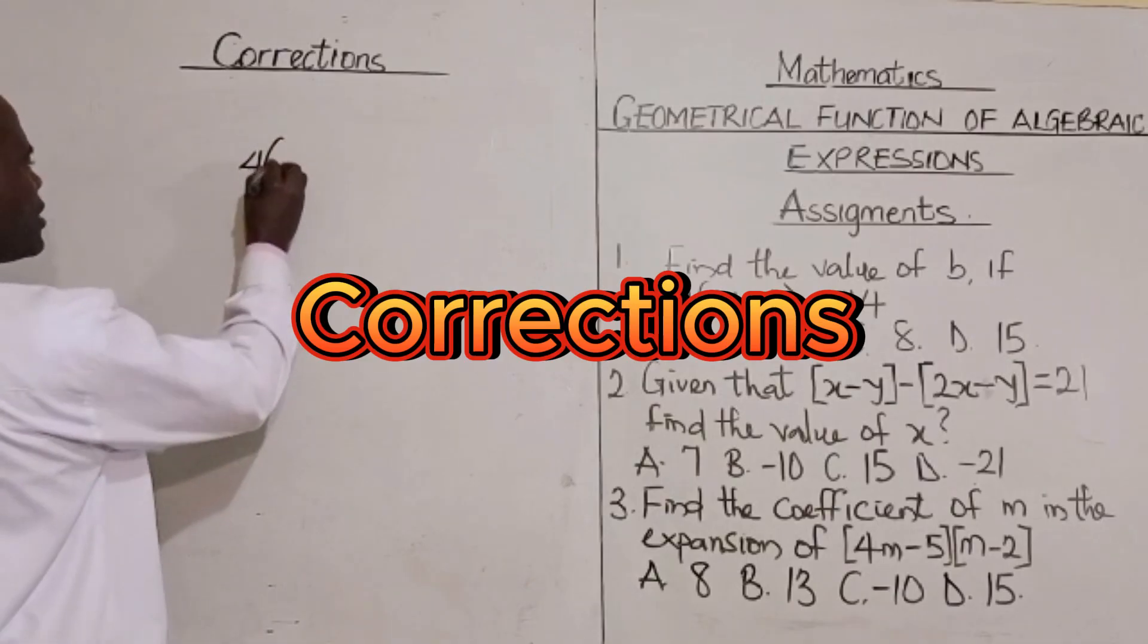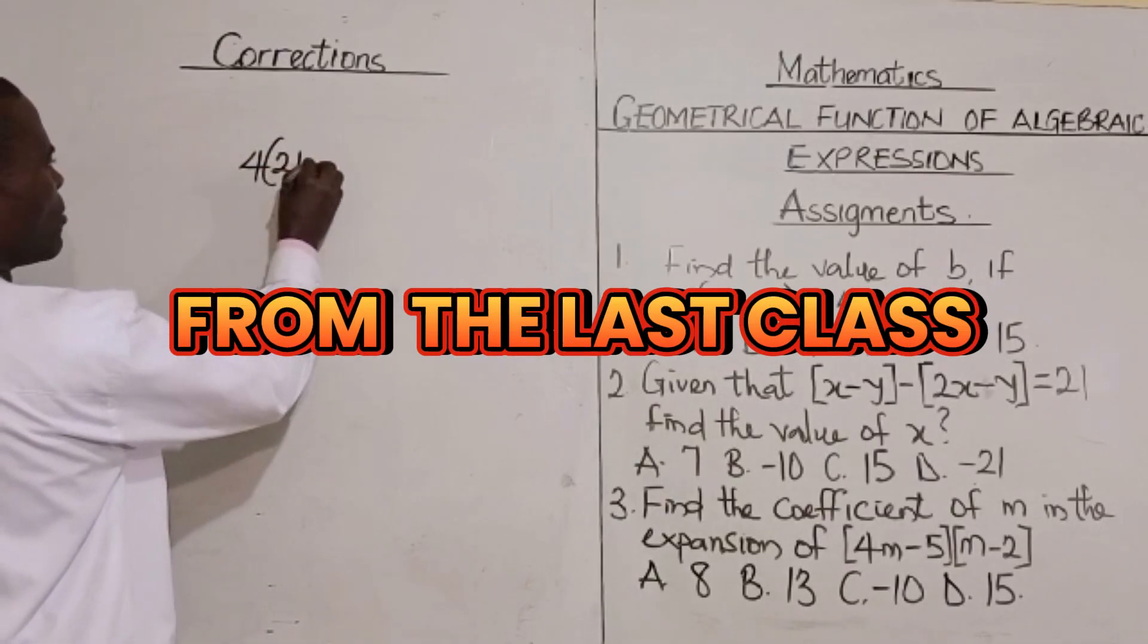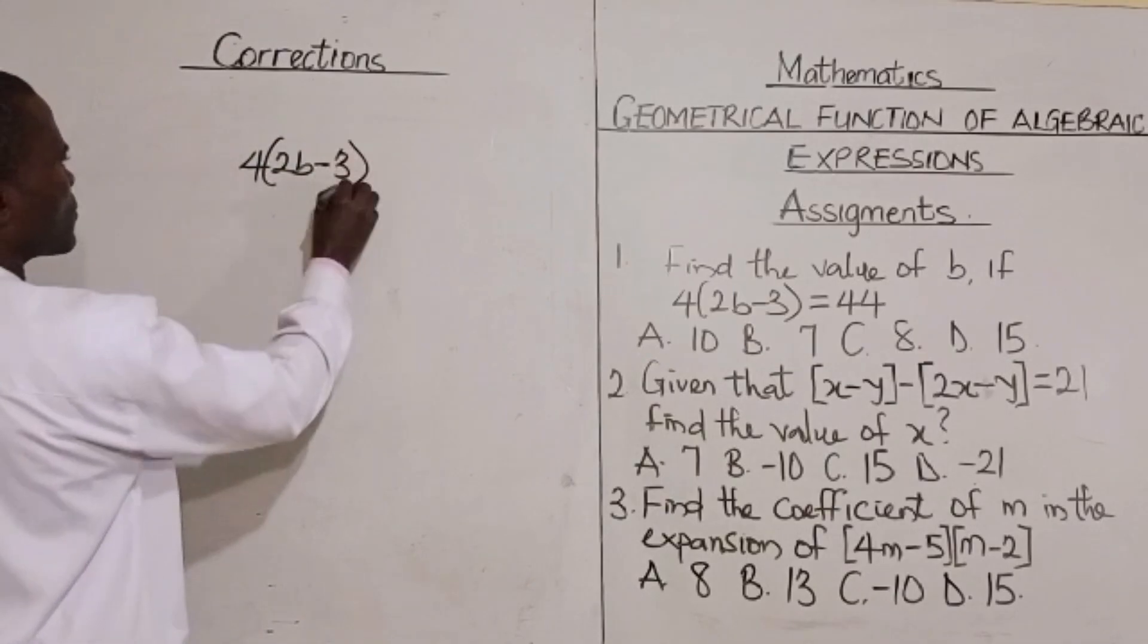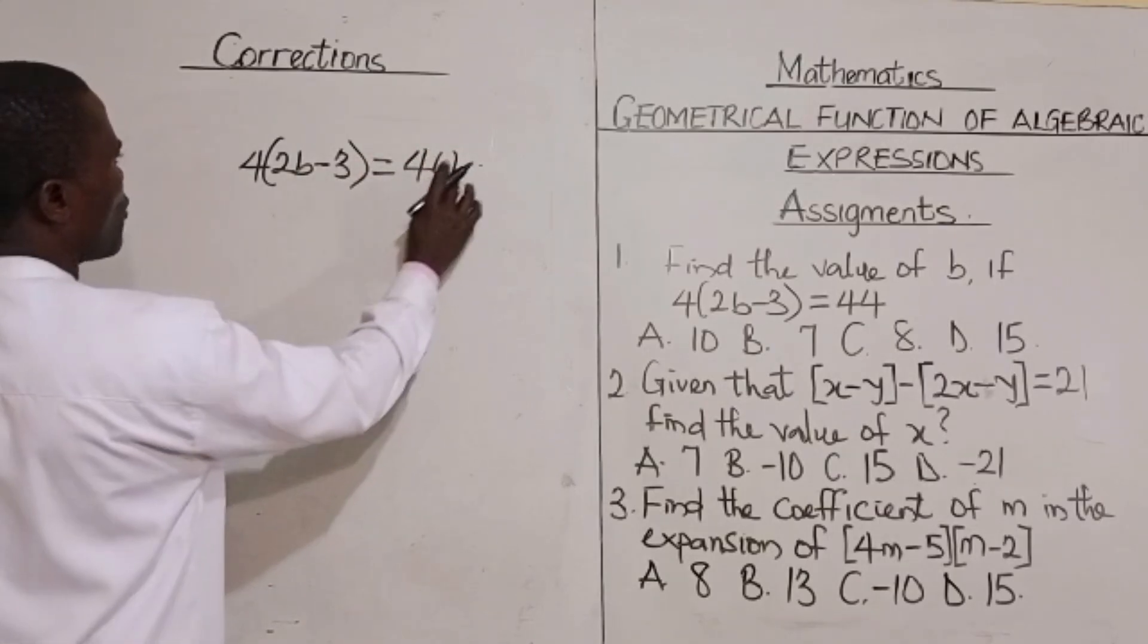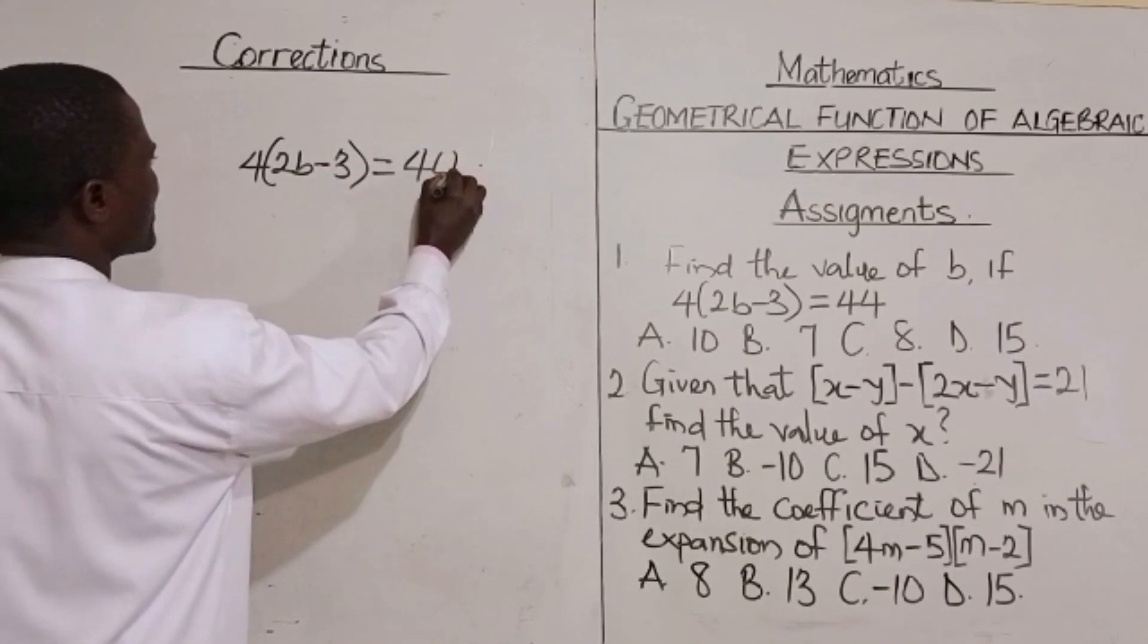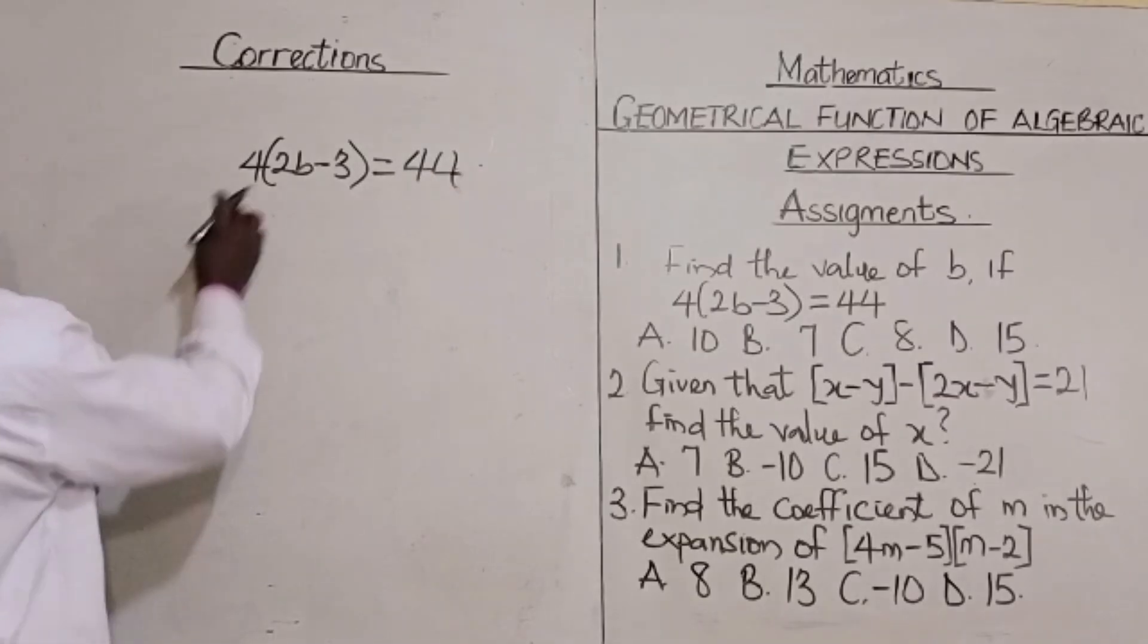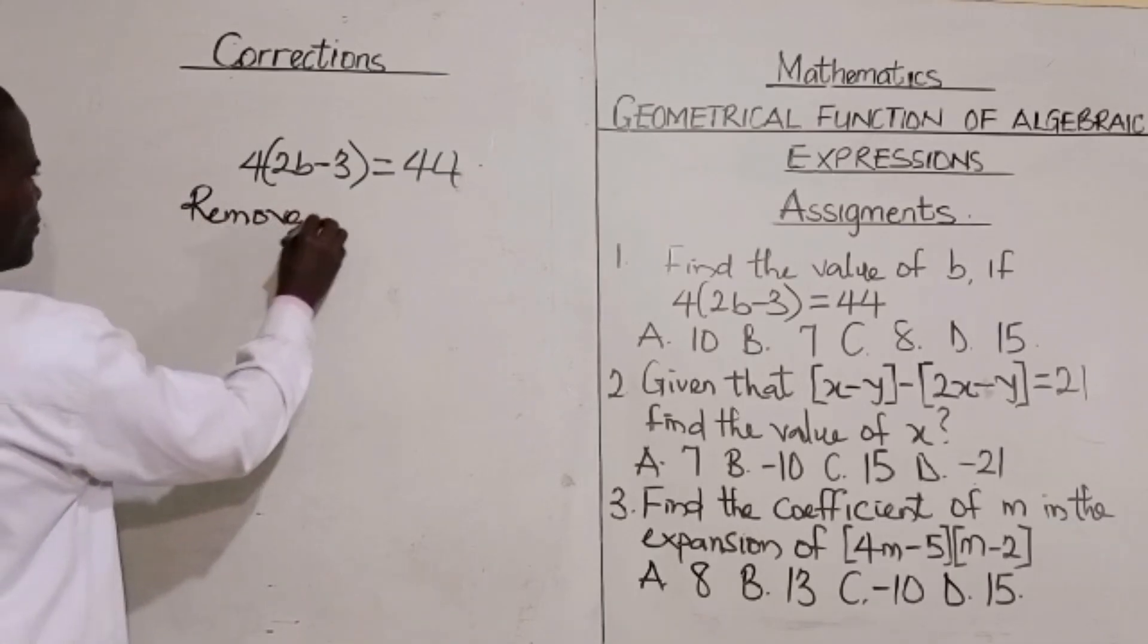Oh into bracket 2b minus 3 is equal to 44. So what we are going to do in this case is for us to open the bracket. We remove the bracket first.